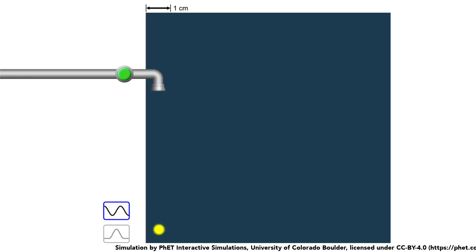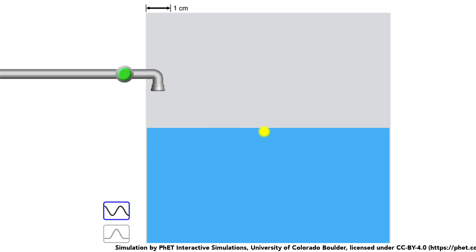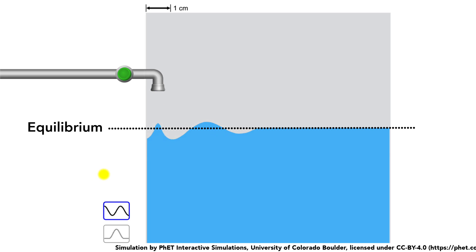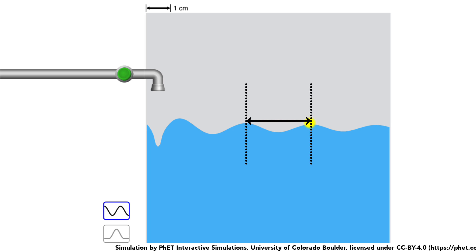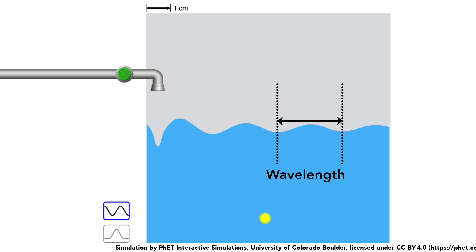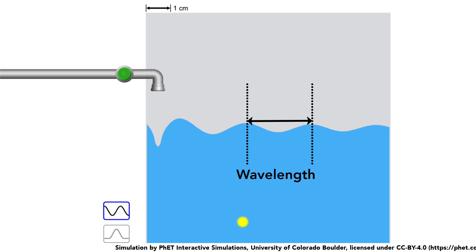To understand another feature, let's look at the whole thing from the side. Before the wave starts, look at the level of the water — this is the equilibrium position. Now when we start the tap, the water level has a bottom level and a top level. We find these peaks, which are the highest points above the equilibrium line — we call them the crests. And we find these valleys, the lowest points below the equilibrium line — we call them the troughs. The distance between any two consecutive crests, or consecutive troughs, is what we call the wavelength. Since it's a length, wavelength is measured in units of length, like meters or centimeters.